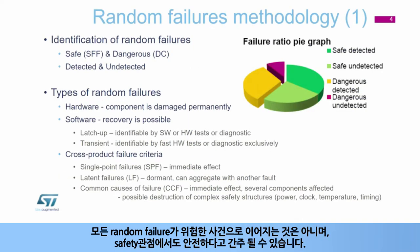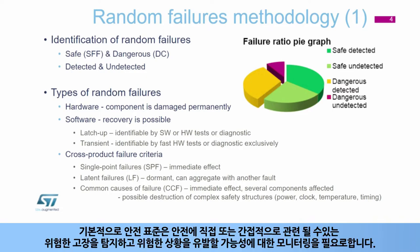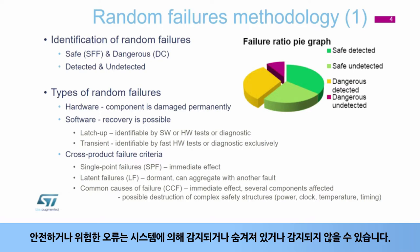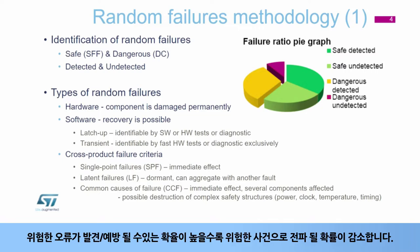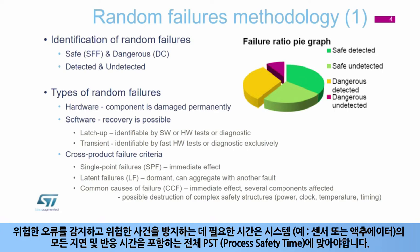Not all random failures result in a hazardous event, and they may even be considered safe from a safety point of view. Safety standards require monitoring to detect dangerous failures that may be directly or indirectly related to safety and have the potential to cause a dangerous situation. Both safe and dangerous errors can either be detected or stay hidden and undetected by the system. The more often dangerous errors are discovered and prevented in time, the more the probability of a failure propagating into a hazardous event decreases. The time needed to detect dangerous errors and prevent hazardous events must fit into the overall process safety time, or PST, which includes all the possible delays and reaction times for the system, such as on sensors or actuators.